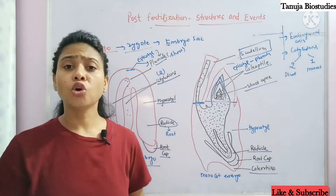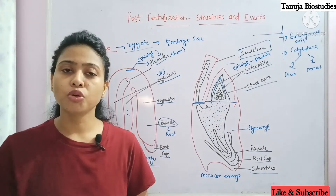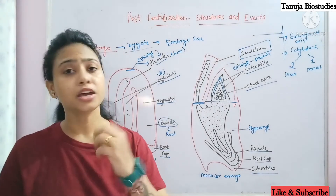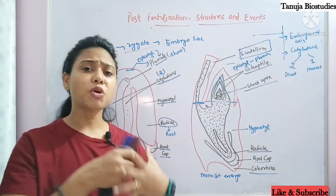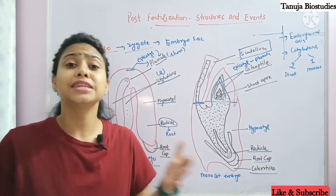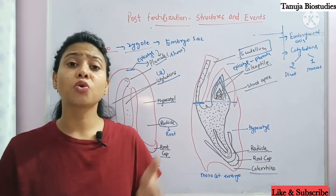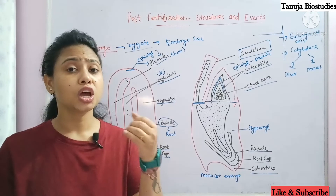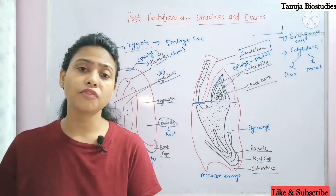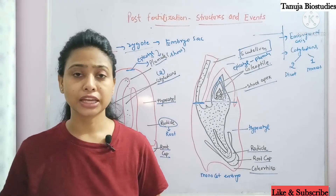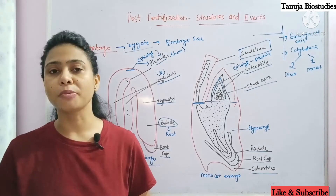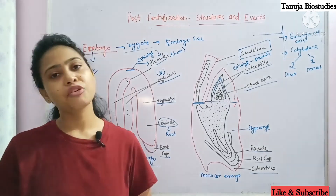So these are the main basic differences in monocot and dicot embryos. We have seen post-fertilization structures and events. Overall, what happens is that the ovary is converted into a seed. In the next video, we will go through the seed formation and see the particular seed structure in monocots, and how is the fruit formation. Till now, if you have any doubt in this lecture, please let me know through the comment section. Thank you so much for watching this video.